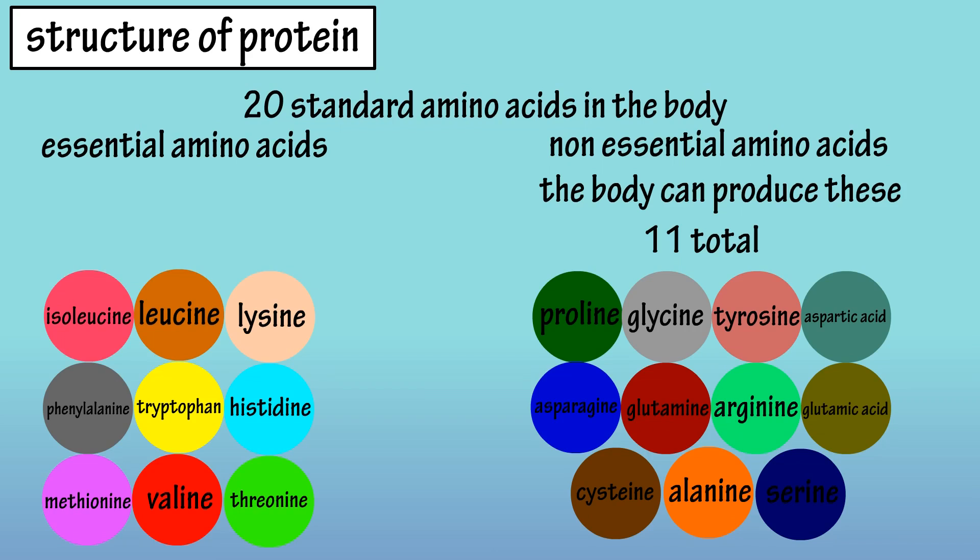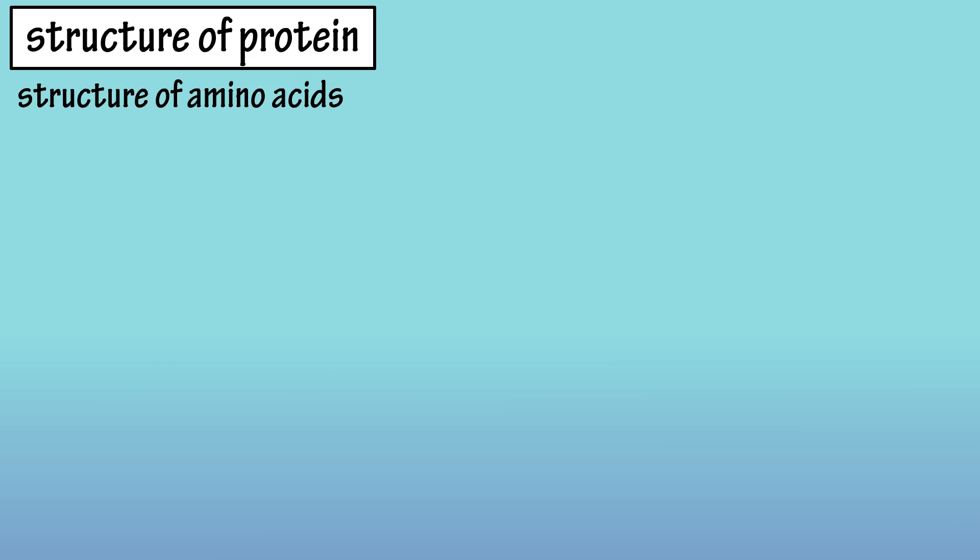Essential amino acids cannot be made by the body, so they must come from the foods we eat. There are a total of 9 essential amino acids.